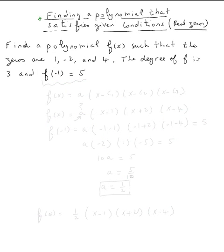The topic is finding a polynomial that satisfies given conditions with real zeros. So let's do this example. We need to find a polynomial f of x such that the zeros are one, negative two, and four, the degree of f is three, and f of negative one is five.